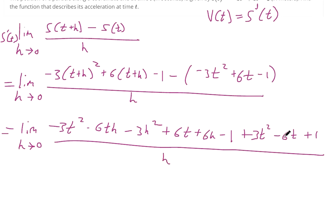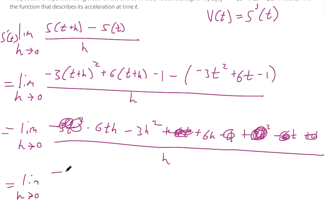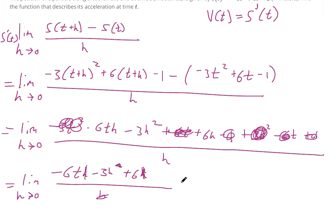What cancels out? We have minus 6t and plus 6t — that's gone. We have negative 3t squared and plus 3t squared. We have negative 1 and plus 1. It's not by coincidence — it's because of how the limit definition of a derivative works. Everything's being divided by h, so you can cancel out one of the h's. Now it's the limit as h approaches 0 of negative 6t minus 3h plus 6. There's no divide by zero problem, so now you can just plug in 0 for h, giving you negative 6t plus 6.